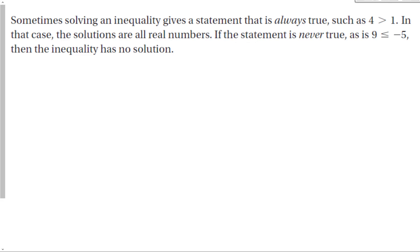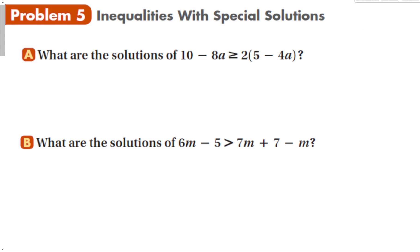Sometimes solving an inequality gives a statement that is always true, like 4 is greater than 1 — in that case, the solutions are all real numbers. If the statement is never true, like 9 is less than or equal to negative 5, then the inequality has no solution. This happens when all the variables cancel out and you check whether the remaining statement is true or false.